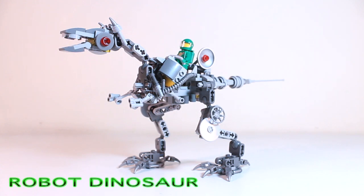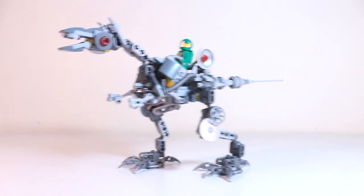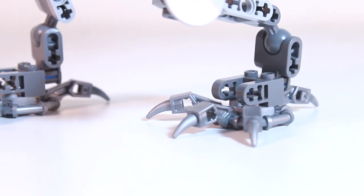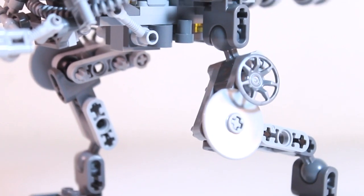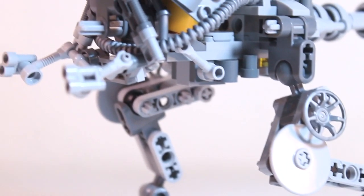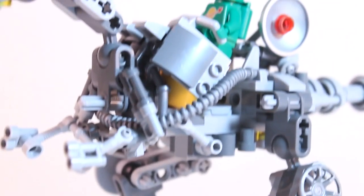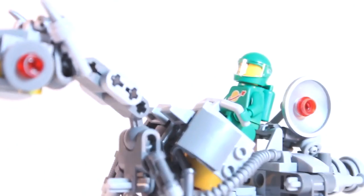And up next we have a robot dinosaur. Now if we take a look at the feet, you can see there's a very simple concept, a similar technique used with the hands in the official set. And moving up you can see that we have a variety of detailed pieces just to give it that machine look.